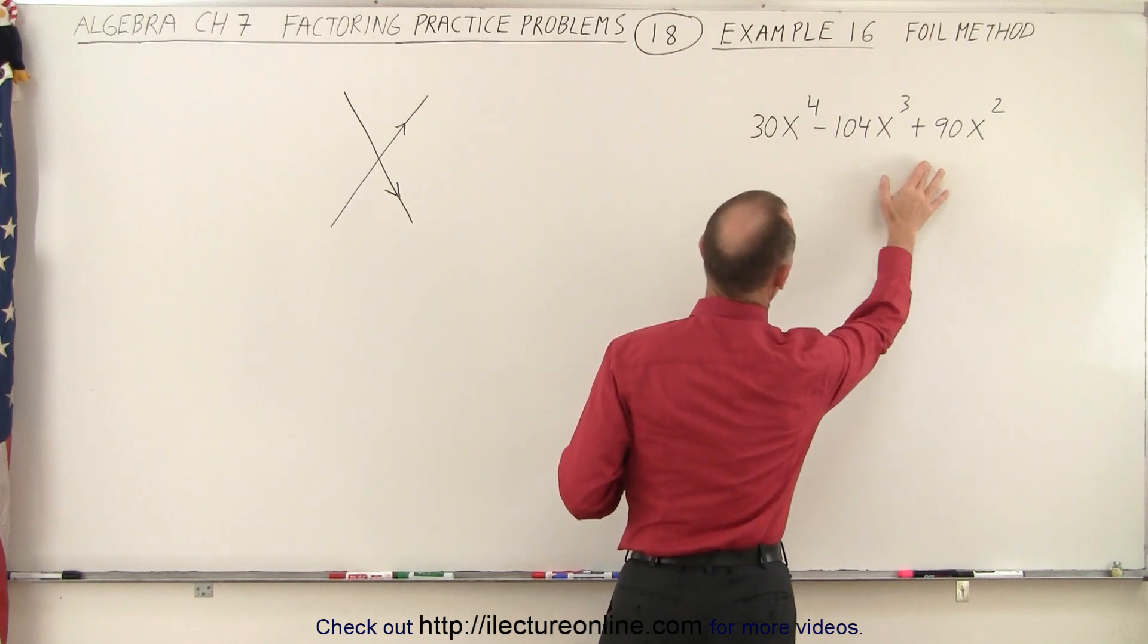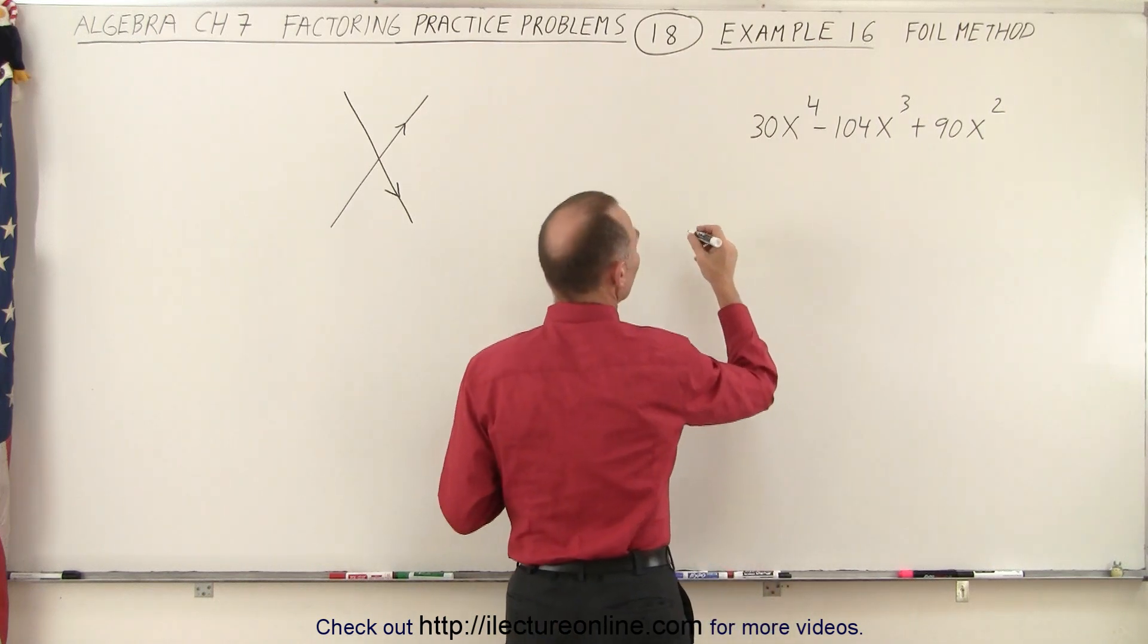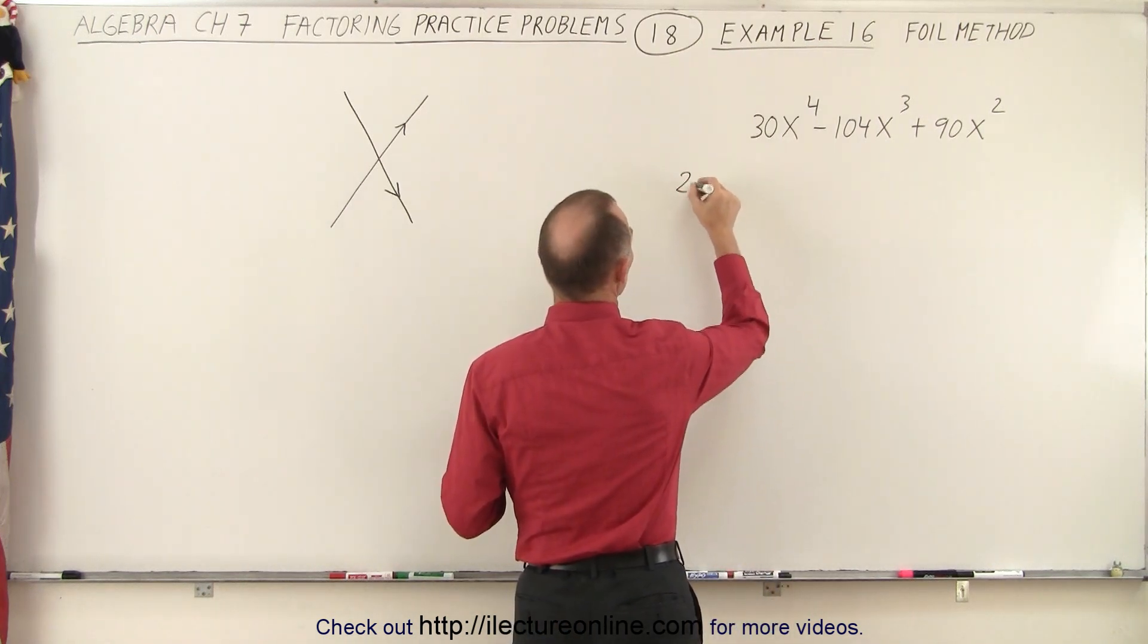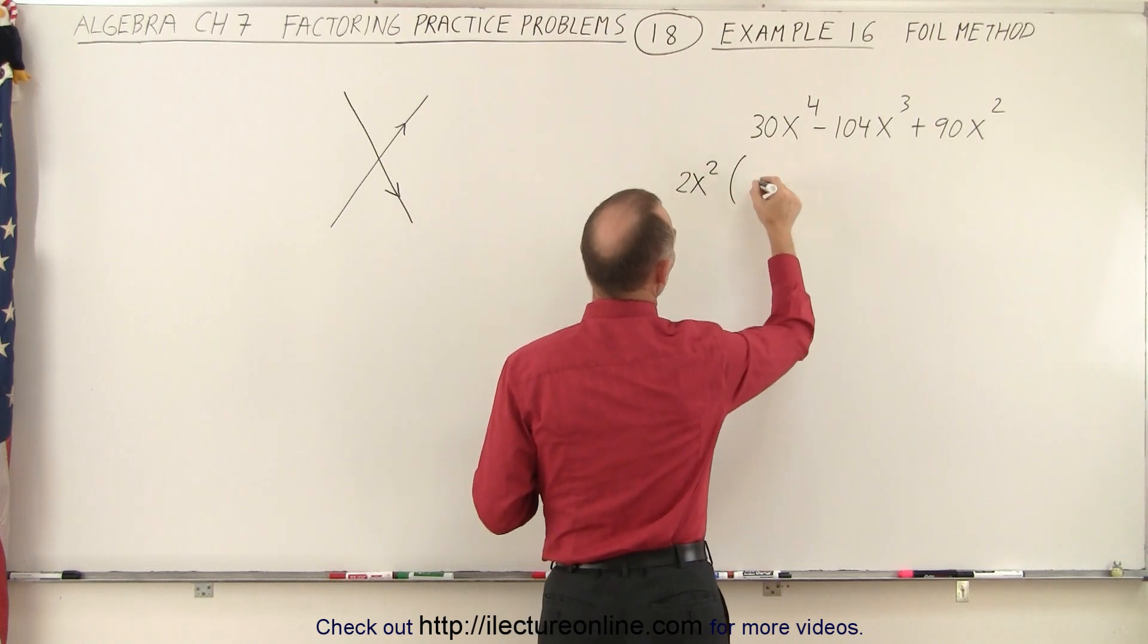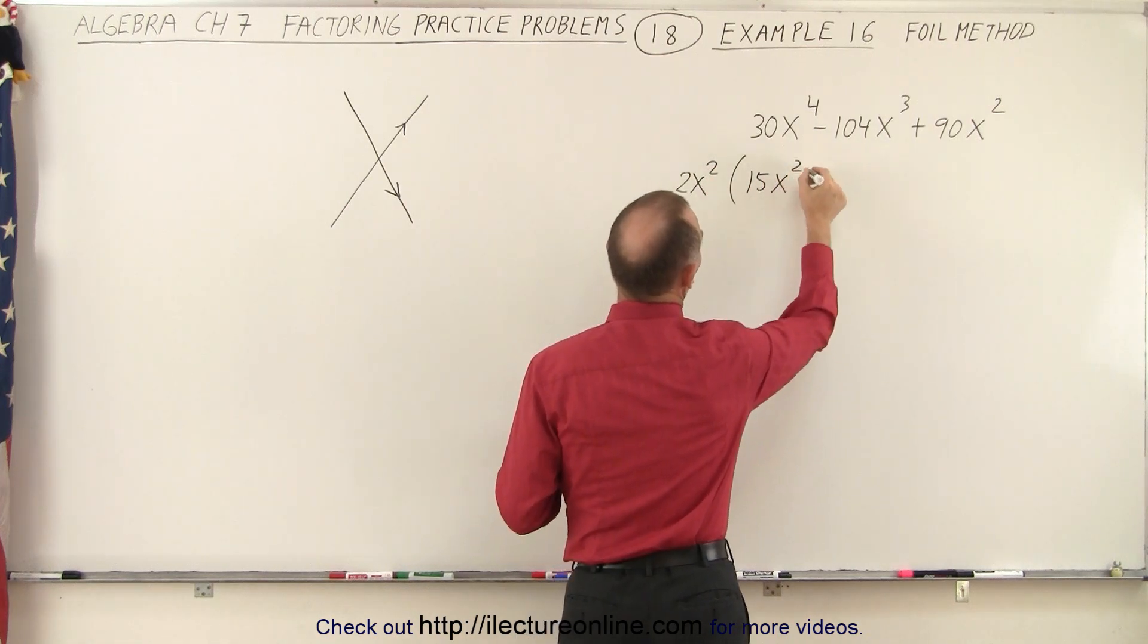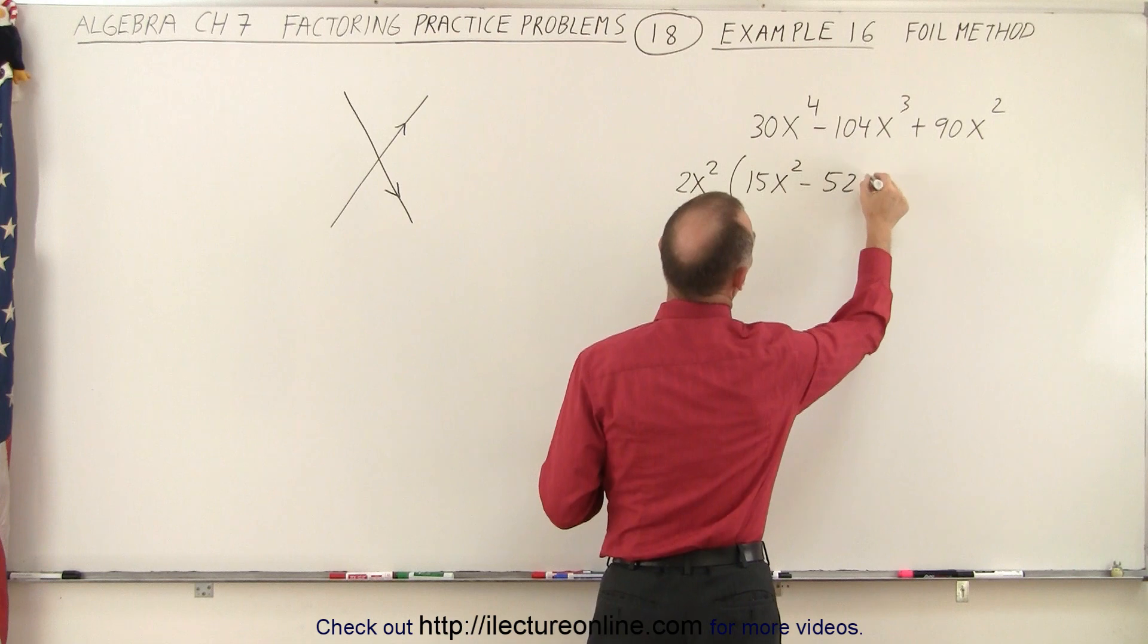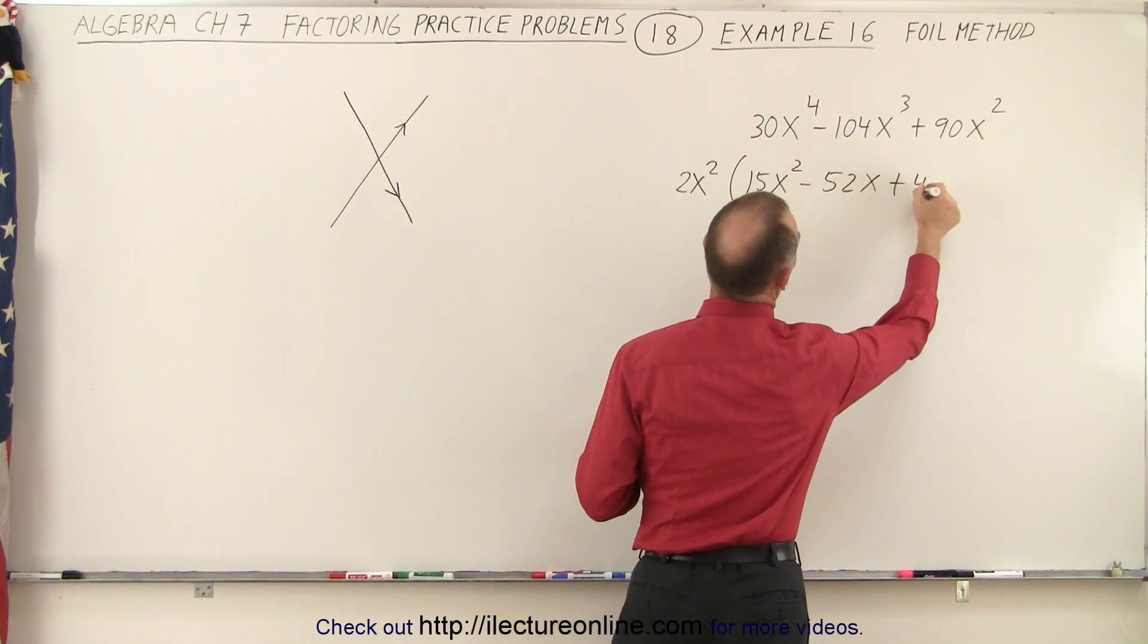We can factor out an x-squared and everything is even, so we can also factor out a 2. So 2x-squared, which leaves us with 15x-squared minus 52x plus 45.